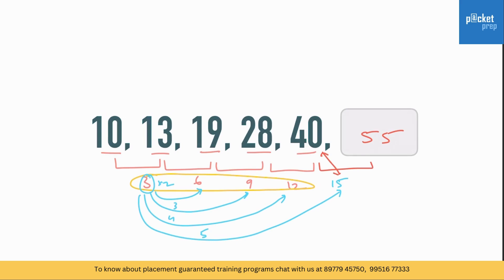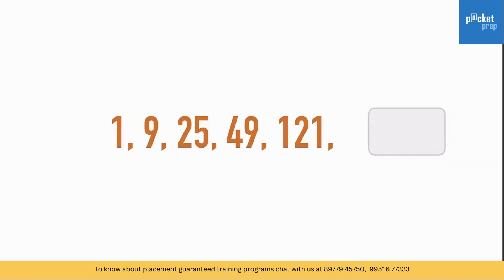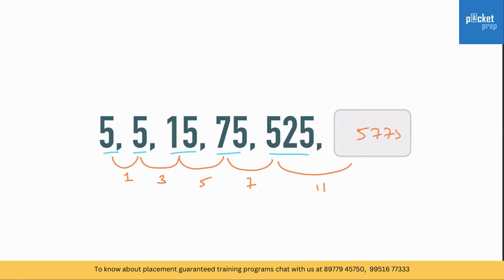The next common series type involves primes. For example: 121, 49, 25, 9, 1. These are squares of prime numbers: 11², 7², 5², 3², 1². So the next term should be 13², which is 169. Another example: 5, 15, 75, 525. Look at the ratios — they are 3, 5, 7 — so the next ratio is 11, giving 525 times 11 equals 5775.